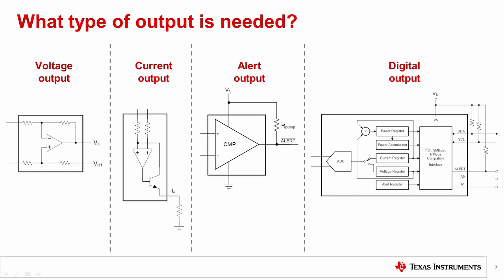The last application constraint we'll consider is the output type. Many current sense amplifiers have an analog output, either voltage or current. If the current measurement results will be used for feedback or control of another analog device, then choosing an analog output makes sense.